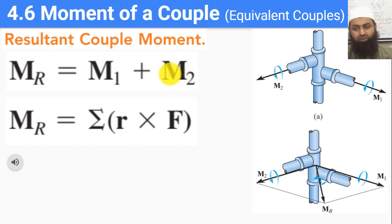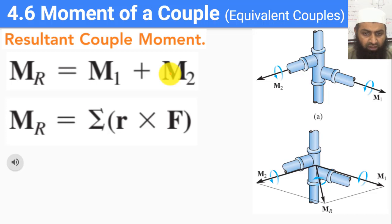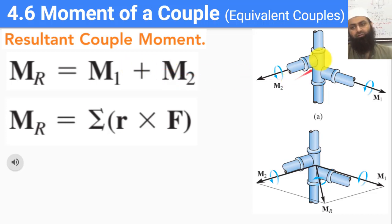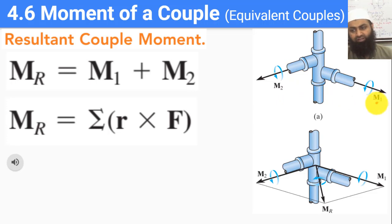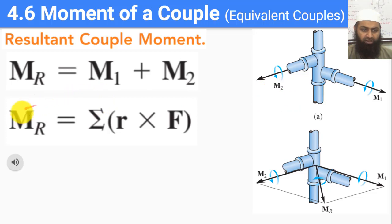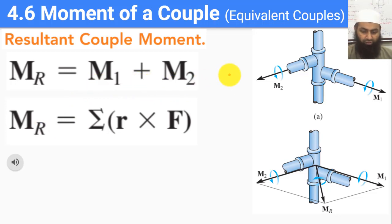Couple moments in terms of vector moments can be treated exactly like our previous moments. That means the resultant of two couple moments is just the vector sum of those couples. If we have a rigid body with two couple moments acting on it — one couple moment m1 and another m2 — the resultant couple moment is just m1 plus m2, exactly like what we used to do with regular moments.